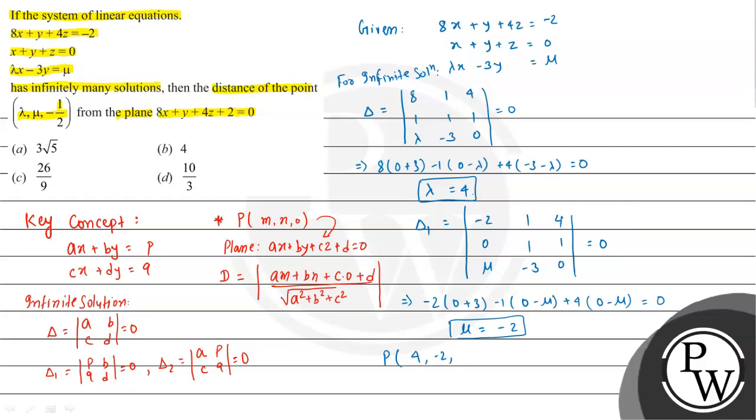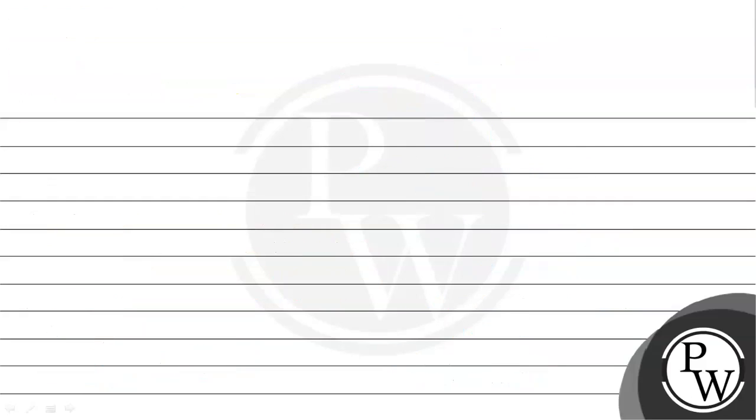So the point coordinates are lambda equals 4, mu equals minus 2, and third coordinate is minus 1/2. The plane is 8x plus y plus 4z plus 2 equal to 0. We need to find the distance.